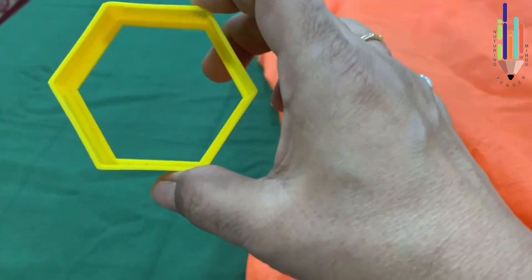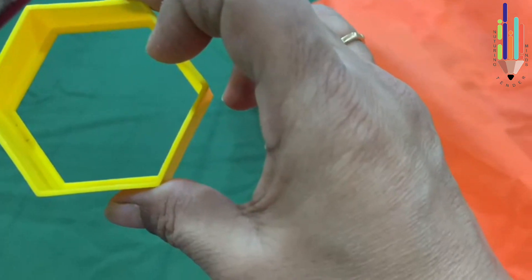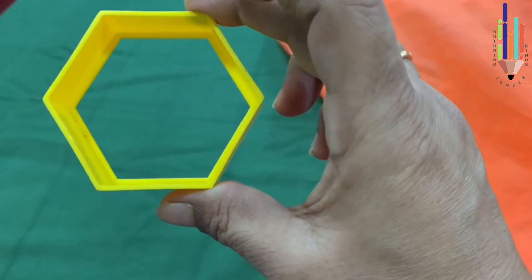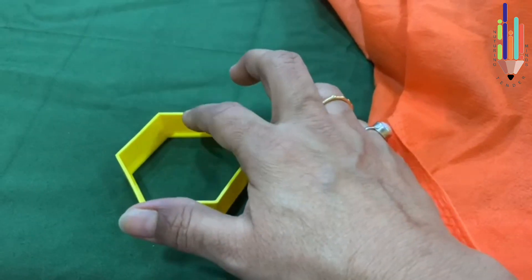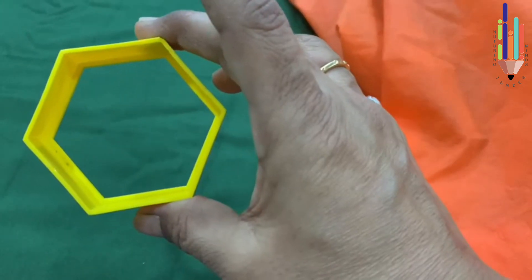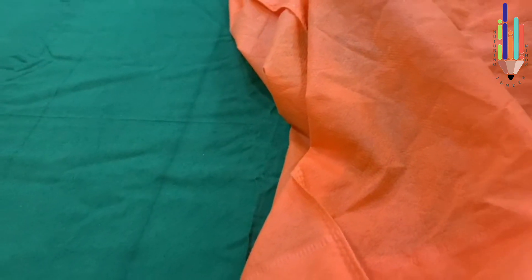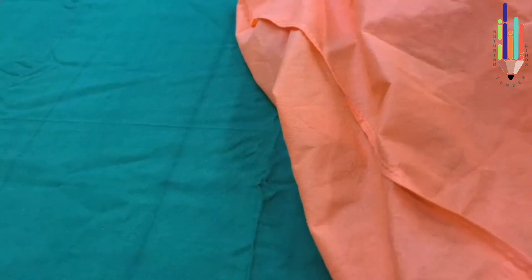Now what shape is this? This is a hexagon shape. It has got one, two, three, four, five, six sides. Now I put my hand again into the bag.